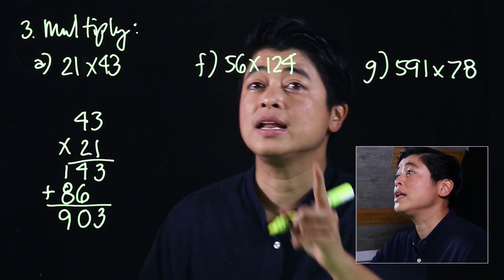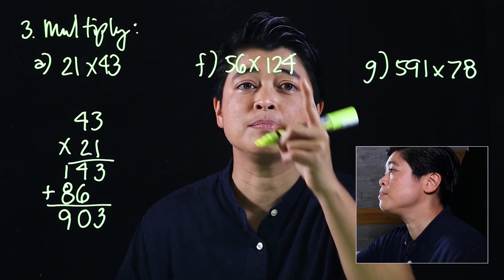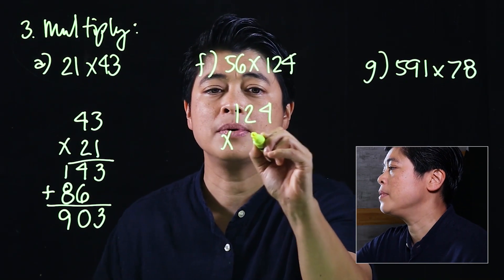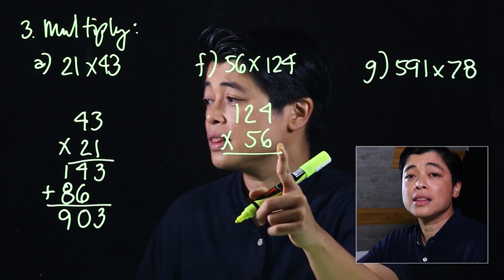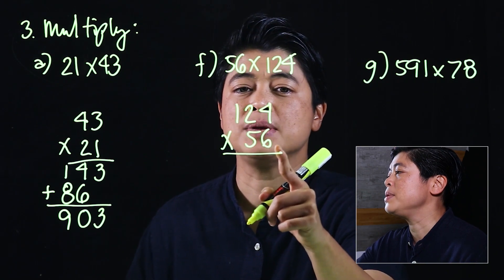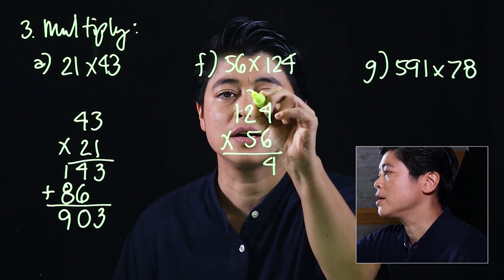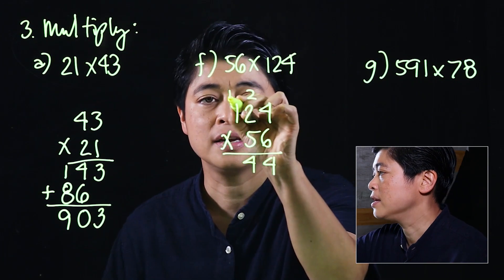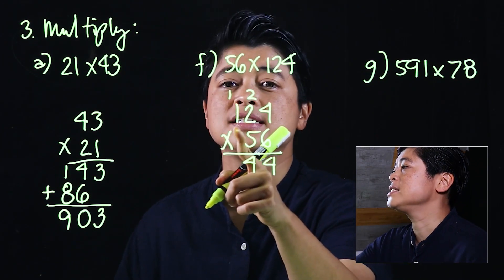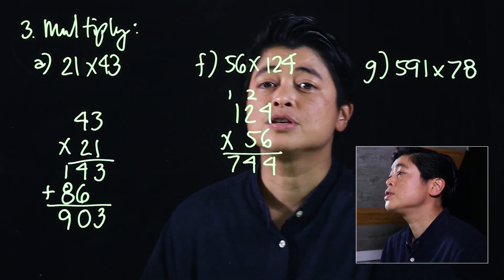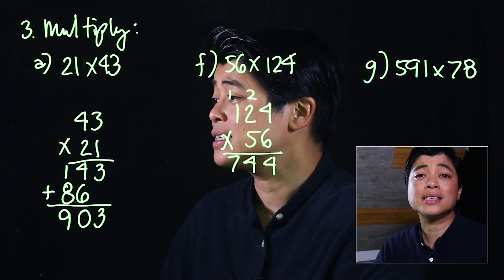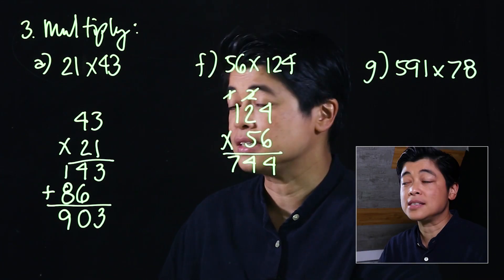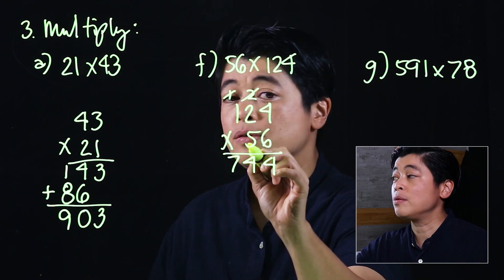For letter F, multiply 56 by 124. For consistency we start with the bigger number on top — 124 — multiplied by 56. Starting with the ones digit: six times four is 24; six times two is 12 plus two is 14; six times one is six plus one is seven. If your kids are on the careless side, cancel those carried numbers so the new regrouping won't cause confusion.